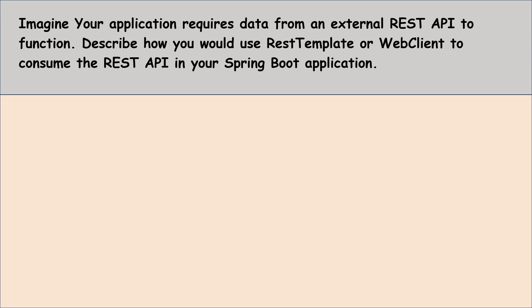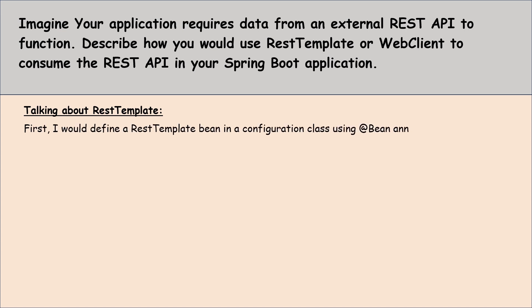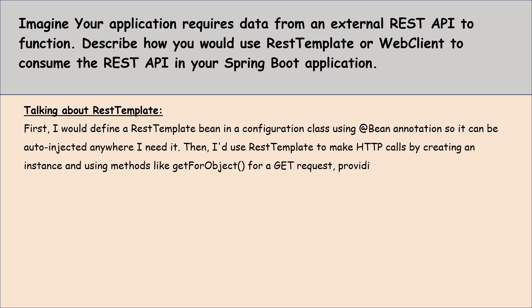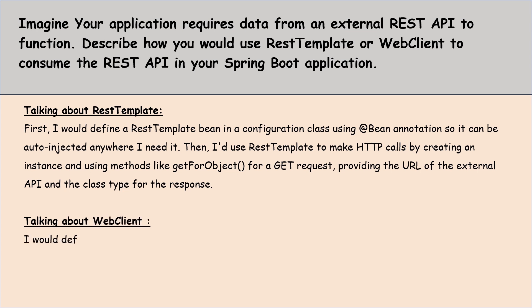Talking about REST Template: first I would define a REST Template bean in a configuration class using the Bean annotation so it can be auto-injected anywhere I need it. Then I would use REST Template to make HTTP calls by creating an instance and using methods like getForObject for a GET request, providing the URL of the external API and the class type for the response.